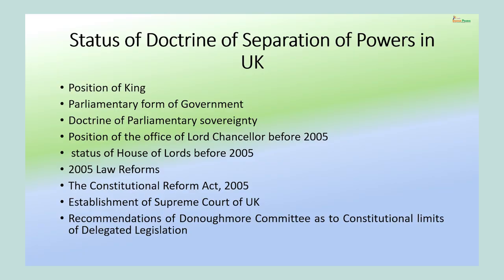The recommendations of the Donoughmore Committee — the committee on ministers' powers appointed in 1929 to investigate the area of delegated legislation — were also in favor of having separation of powers to some extent in England. The Donoughmore Committee suggested that though parliament is sovereign, at the time of making delegation of powers it must adopt the doctrine of self-restraint, so that essential legislative powers may not be delegated to the executive. This is the position of separation of powers in UK.